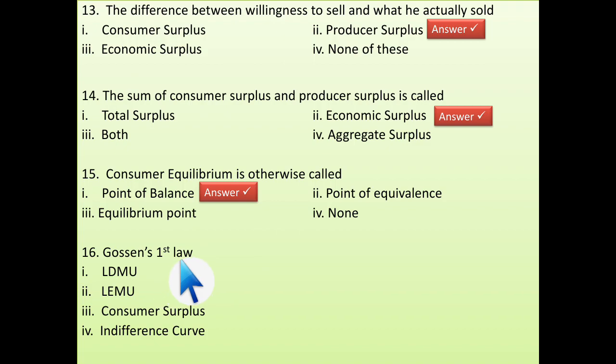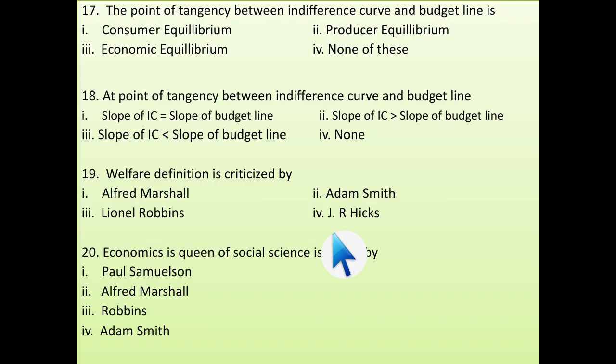Well, next is Gossen's first law. What is Gossen's first law? LDMU that is law of diminishing marginal utility. And LEMU is Gossen's second law. Next is the point of tangency between the indifference curve and budget line is called as consumer equilibrium. And recently, we have covered this part.